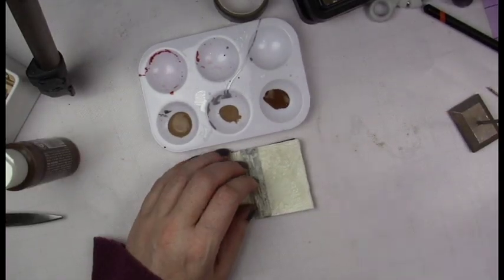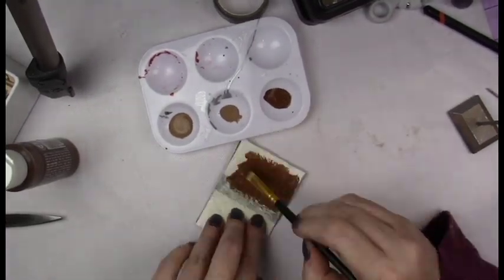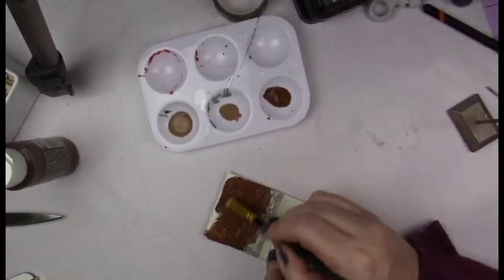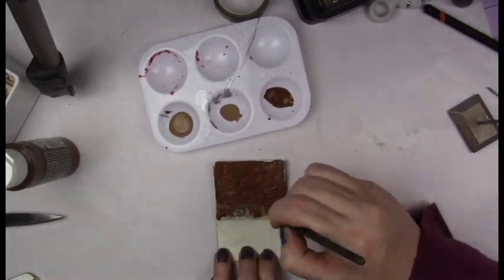Here I'm taking some dark brown craft paint to lay down the base coat on the outside of the book.